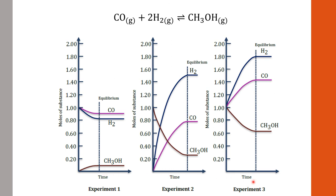All three experiments have one thing in common: after equilibrium is reached, the amount of substance remains unchanged — but the amounts don't have to be equal, as they really depend on how you start the reaction. However, at equilibrium, the ratio of concentrations of the substances will give a constant value, and that is the equilibrium constant, which we'll learn about in the next video.